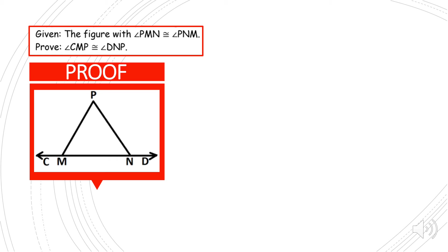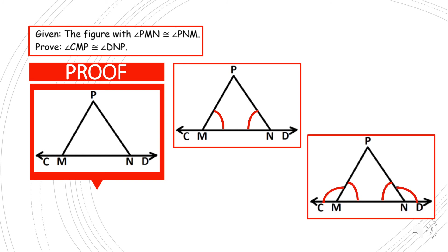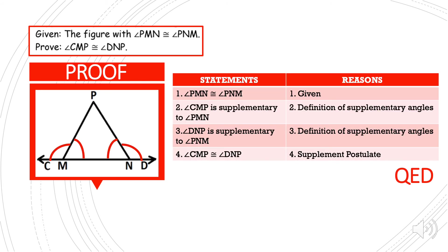In the figure, angle PMN is congruent to angle PNM. Prove that angle CMP is congruent to angle DNP. We can prove these two angles by considering supplementary angles. So here is our proof. Statement number one: angle PMN is congruent to angle PNM, given. Angle CMP is supplementary to angle PMN by definition of supplementary angles. Angle DNP is supplementary to angle PNM by the definition of supplementary angles also. So finally, angle CMP is congruent to angle DNP by the supplement postulate. QED.